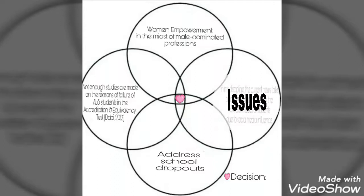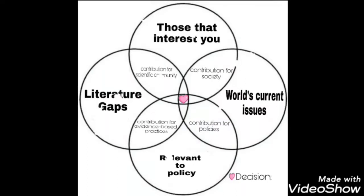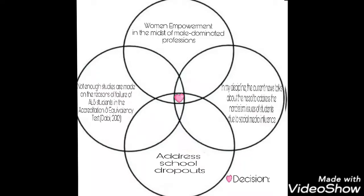On the contribution for society, the world really needs to help address teenagers' attitudes — in my discipline, the current news talks about the need to address narcissism issues of students due to social media influence. I'm also interested in women empowerment, which is another consideration. Since both topics can contribute to society, but the most relevant to my degree in education is women empowerment — narcissism falls more under psychology — so I would choose women empowerment. You just have to make the right decision, as there are many considerations to arrive at a researchable topic.